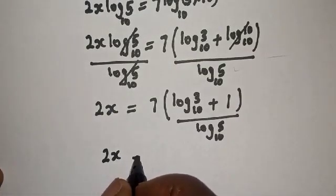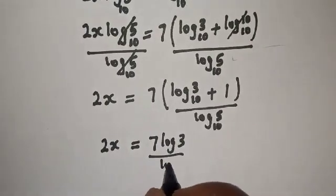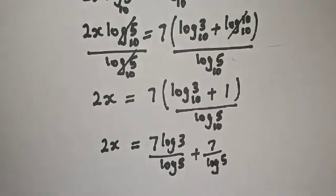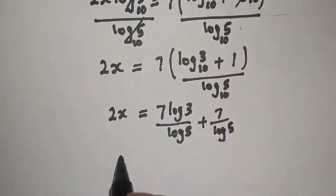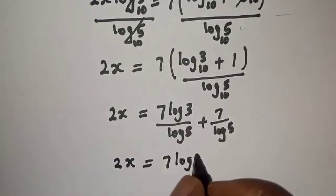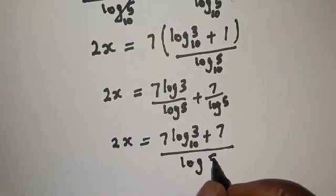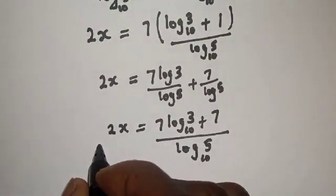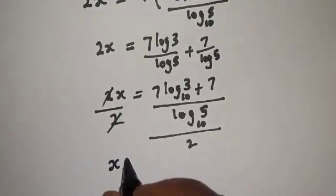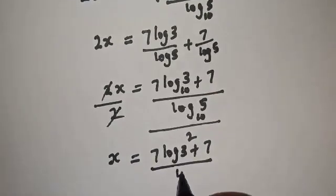2s is equal to 7 log 3 over log 5 plus 7 over log 5. Simplifying: 2s is equal to 7 log 3 base 10 plus 7 over log 5 base 10. Dividing both sides by 2, s is equal to 7 log 3 plus 7 over log 5, all divided by 2.